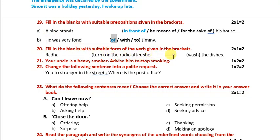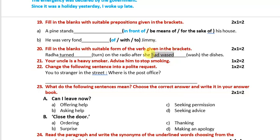'Rada ___ on the radio after she ___ the dishes.' Here the conjunction 'after' has been given, so two sentences are being combined. It is in past perfect — one sentence in simple past and one in past perfect. Answer: 'Rada turned on the radio after she had washed the dishes.'